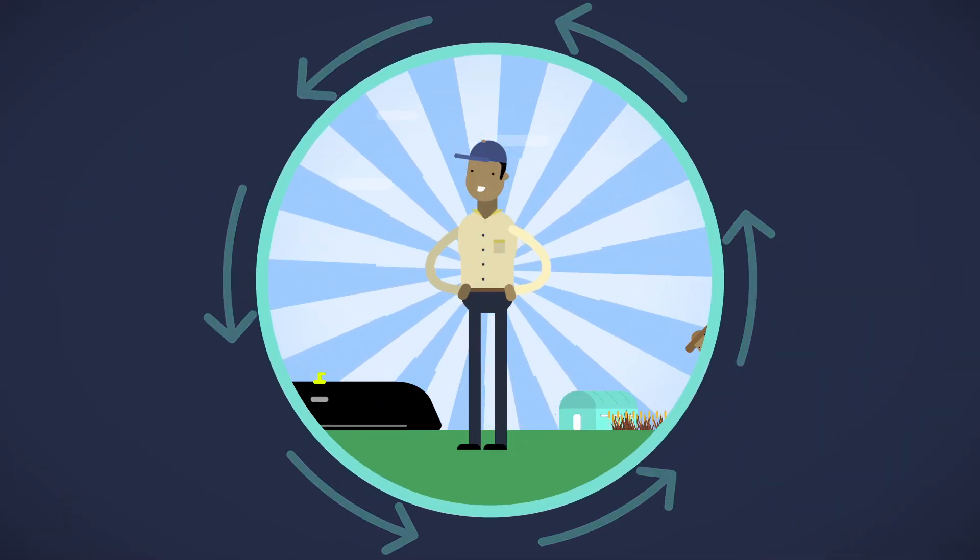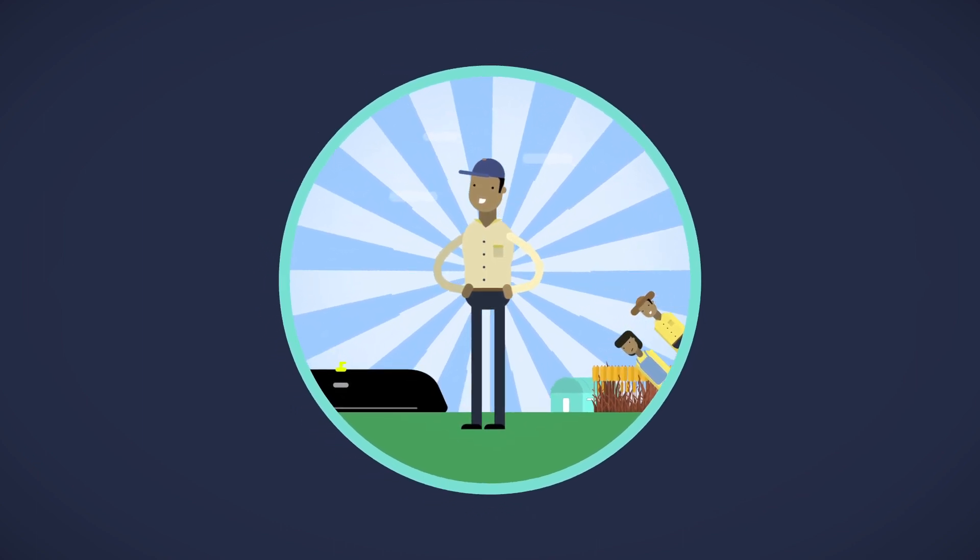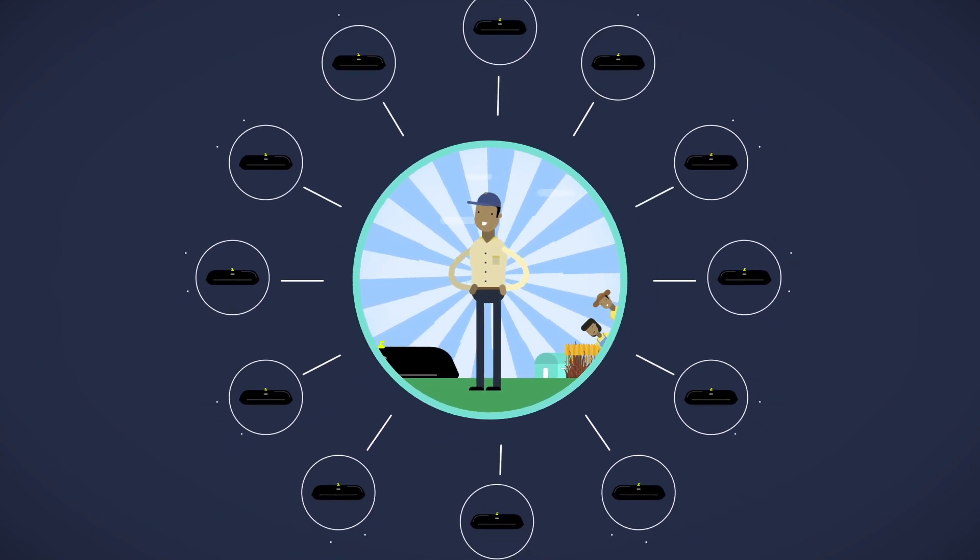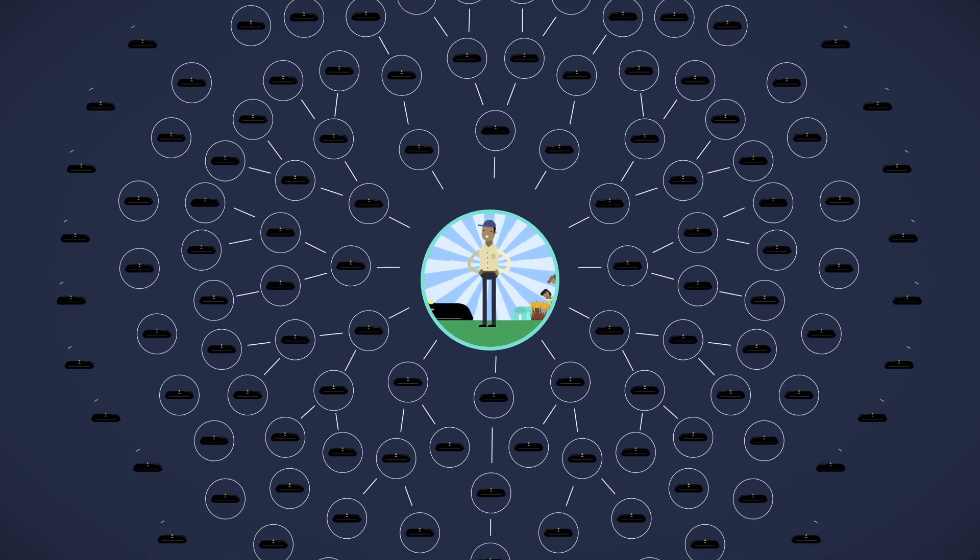This way, we create a cycle of satisfied and empowered farmers who are autonomous and create their own resources. As they begin to share their experiences and improve economic conditions with their neighbors, this movement continues to grow.